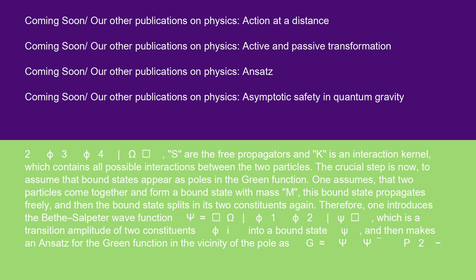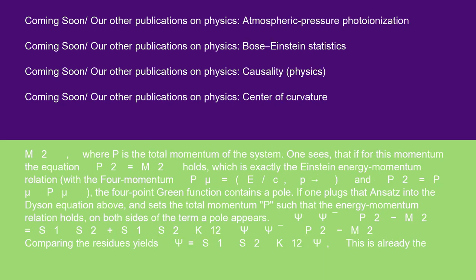And then makes an ansatz for the Green function in the vicinity of the pole as G is almost equal to psi psi/(P2 minus M2), where P is the total momentum of the system. One sees that if for this momentum the equation P2 equals M2 holds, which is exactly the Einstein energy momentum relation, with the four-momentum Pmu equals E/c P, and P2 equals Pmu Pmu, the four-point Green function contains a pole.